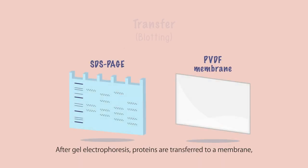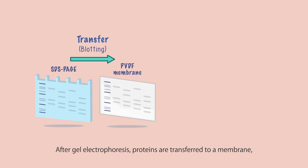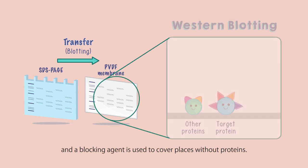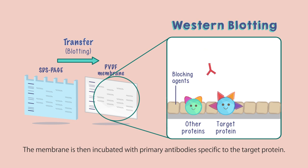After gel electrophoresis, proteins are transferred to a membrane and a blocking agent is used to cover places without proteins. The membrane is then incubated with primary antibodies specific to the target protein.